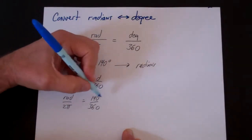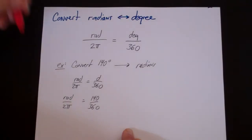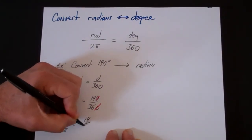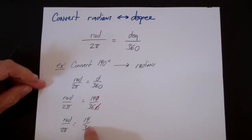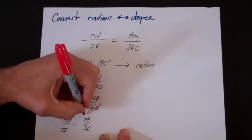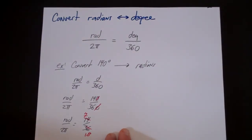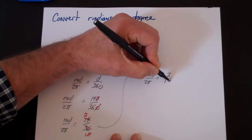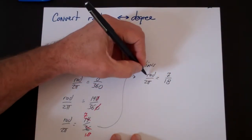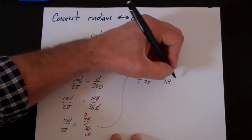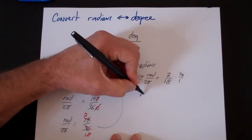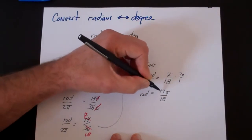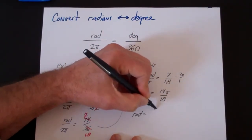Now I simplify. The zeros cancel when you divide both by 10, giving radians over 2 pi equals 14 over 36. Simplifying further, 2 goes into both, making it 7 over 18. So radians over 2 pi equals 7 over 18. To solve for radians, multiply both sides by 2 pi, giving radians equals 14 pi over 18, which simplifies to 7 pi over 9.